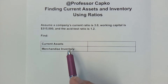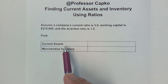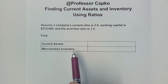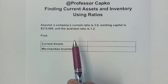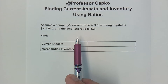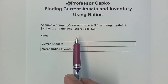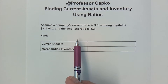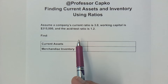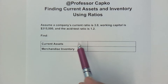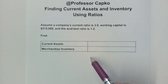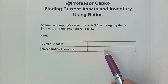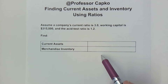Have you been asked to find the current assets and merchandise inventory when you're only given the current ratio, working capital, and acid test ratio for a company, and you're not sure how to find those numbers? Well, you've come to the right place, because I'm Professor Kapko, and I'm going to show you exactly how to find these numbers in today's video.